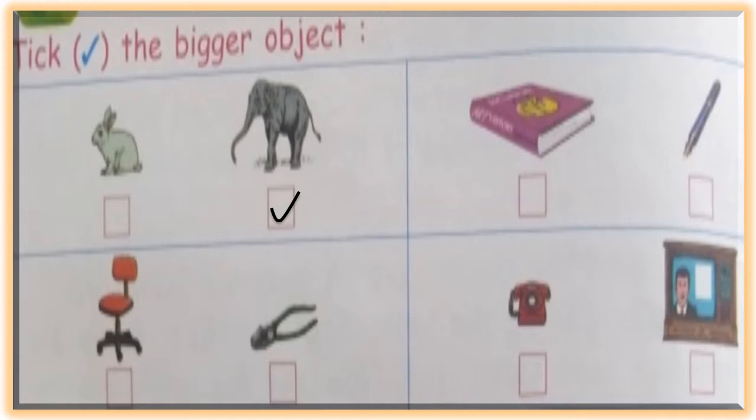Next, you see the second picture. There are two objects, book and pencil. You compare these two objects, which is the bigger object? Book is the bigger object.